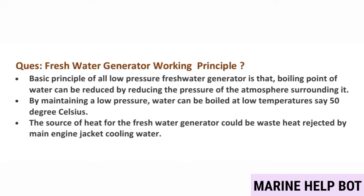Moving towards our first question — fresh water generator working principle. The basic principle of a low pressure fresh water generator is that the boiling point of water can be reduced by reducing the surrounding atmospheric pressure. By maintaining a low pressure, water can be boiled at low temperatures, say 50 degrees Celsius. The source of heat could be waste heat rejected by main engine jacket water cooling.